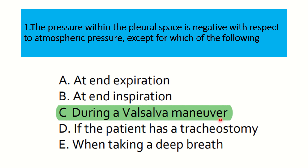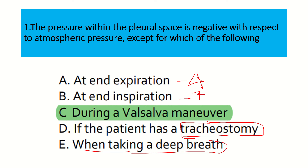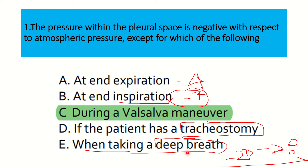So our final answer is: during the Valsalva maneuver — because at the end of expiration intrapleural pressure is minus 4 mmHg, at the end of inspiration it is minus 7 mmHg, and both are negative. If the patient has a tracheostomy, there is no change in intrapleural pressure — it reduces the conducting zone due to bypassing the upper respiratory obstruction but pressure remains negative. When taking a deep breath, it is deep inspiration, so it becomes even more negative — perhaps minus 20 or minus 30.